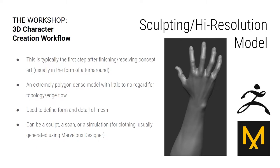Or you can just straight up make the whole character in one shot — you just do all that and be in pain. This is used to define the form and detail of the mesh. It can be a sculpt, a scan, or a simulation if you're doing clothing in something like Marvelous Designer. You can also do clothing sculpting in ZBrush. It's whatever your workflow is, really — whatever you find easiest.